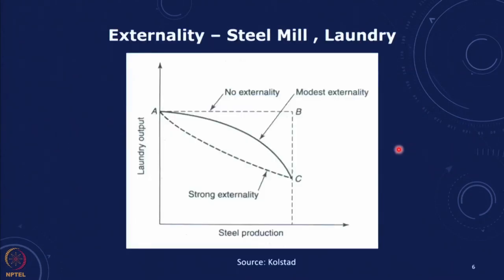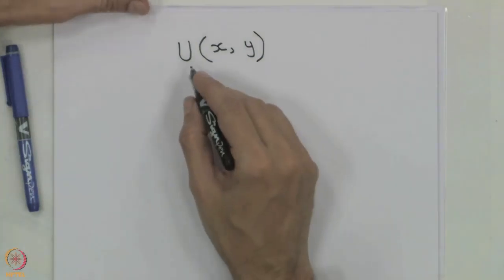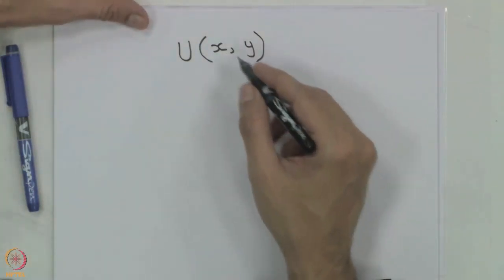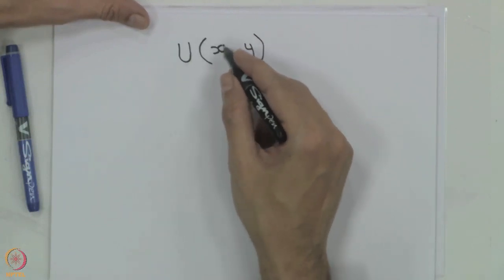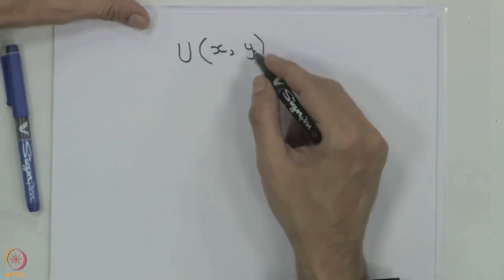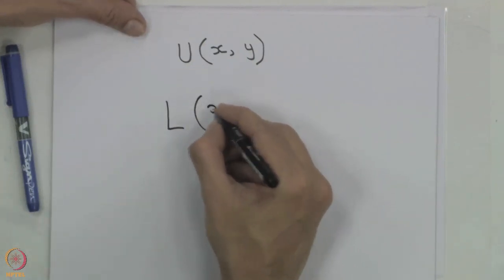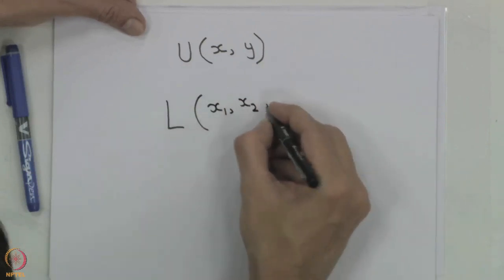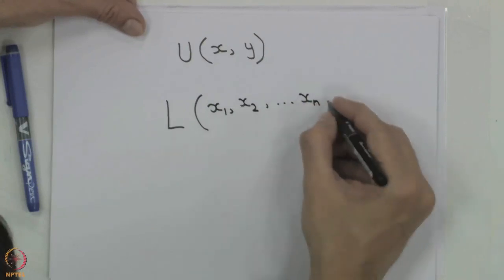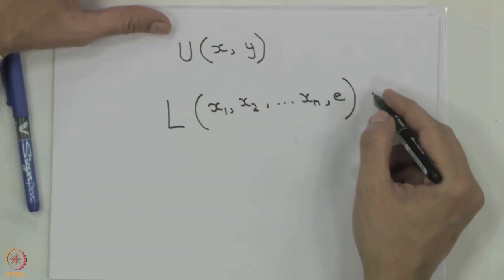In an externality, if we take an entity with a utility function u as a function of x and y, x represents all the input parameters that the entity controls and plans for, while y is a parameter coming from outside which the entity does not control. For instance, the laundry has a production function L(x1, x2, ..., xn, e) where e is the emissions occurring because of the steel factory — this is the externality affecting laundry production.